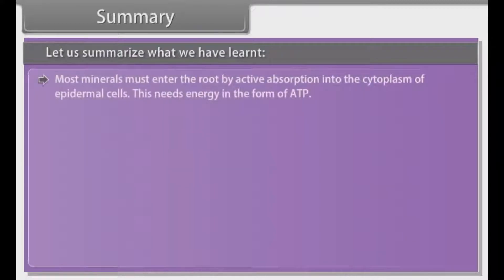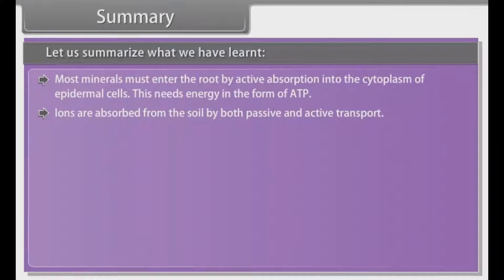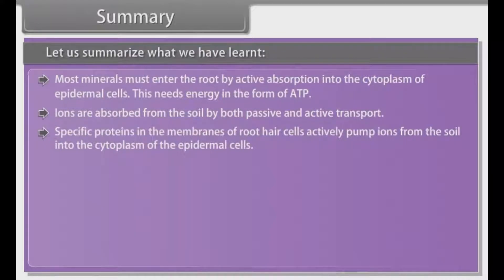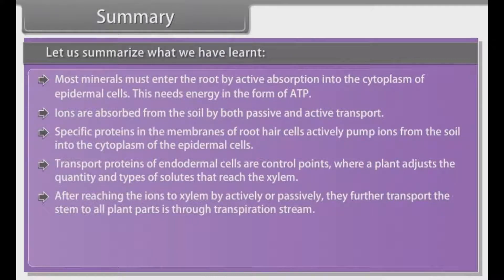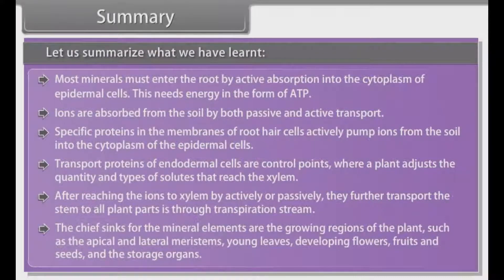Summary. Most minerals must enter the root by active absorption into the cytoplasm of epidermal cells. This needs energy in the form of ATP. Ions are absorbed from the soil by both passive and active transport. Specific proteins in the membranes of root hair cells actively pump ions from the soil into the cytoplasm of the epidermal cells. Transport proteins of endodermal cells are control points where a plant adjusts the quantity and types of solutes that reach the xylem. After reaching the xylem, whether actively or passively, ions are further transported through the stem to all plant parts via the transpiration stream. The chief sinks for the mineral elements are the growing regions of the plant, such as the apical and lateral meristems, young leaves, developing flowers, fruits and seeds, and the storage organs.